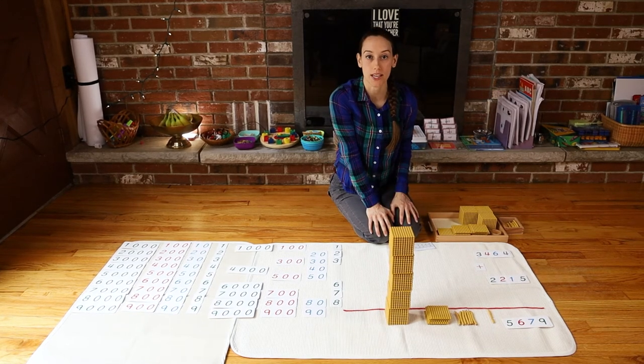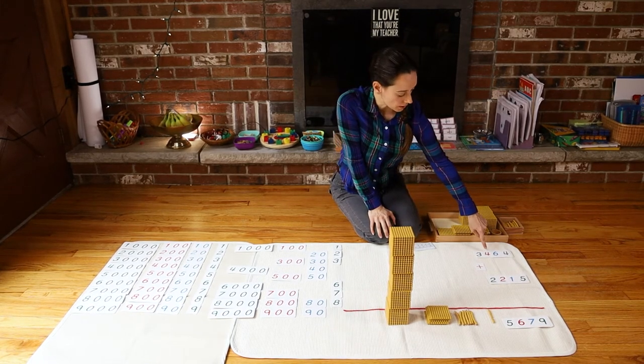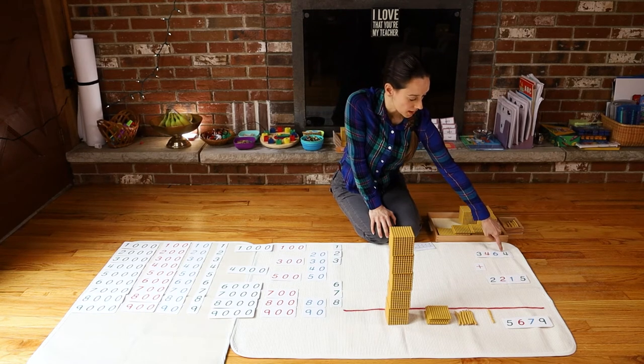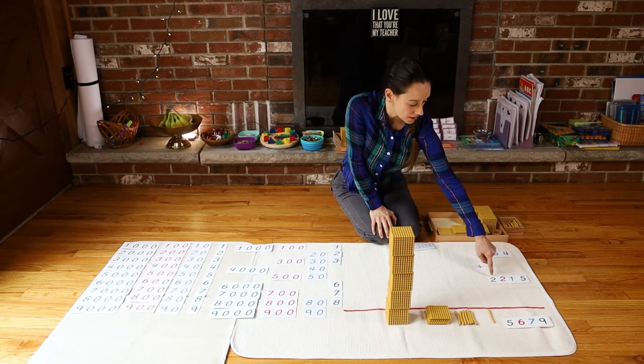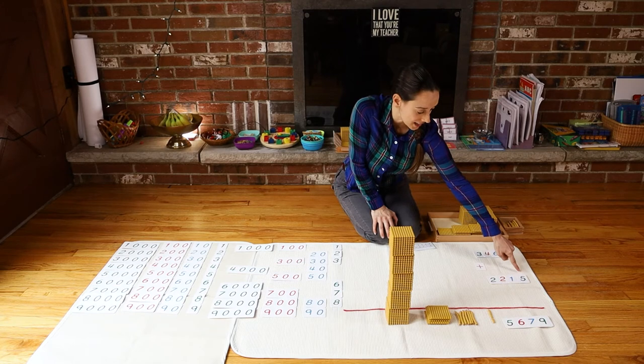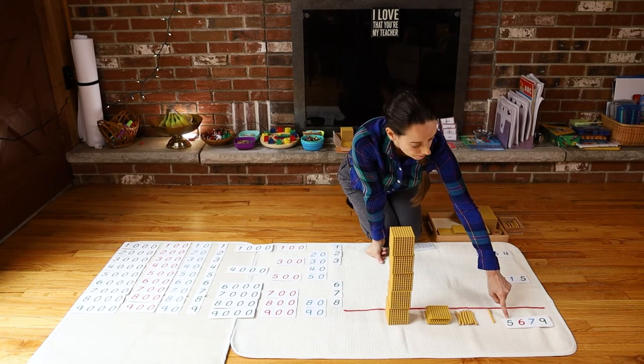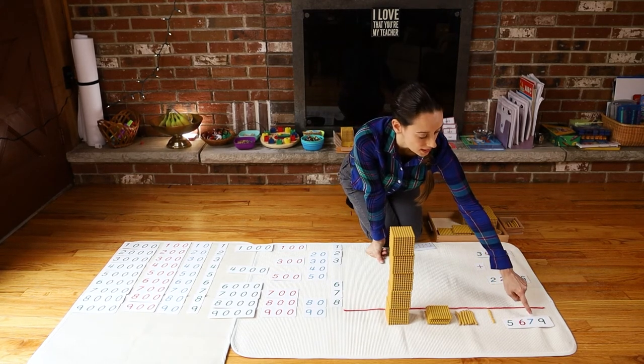And so over here, you can see that they have now written the equation. Have the child read you the equation. Three thousand four hundred sixty four plus two thousand two hundred fifteen equals five thousand six hundred seventy nine.